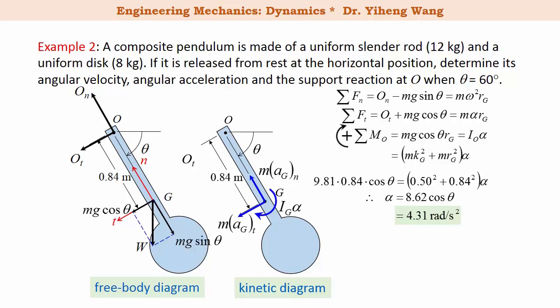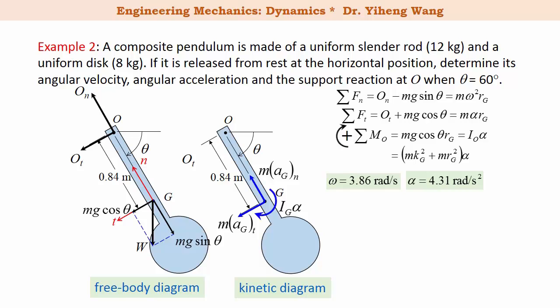For angular velocity, since this is rotation about a fixed axis, we use the kinematic equation ω·dω = α·dθ and integrate. At θ = 60°, ω = 3.86 rad/s. With both ω and α known at θ = 60°, we substitute into the normal and tangential force equations to calculate O_n and O_t, the support reaction components at O. This completes the problem.